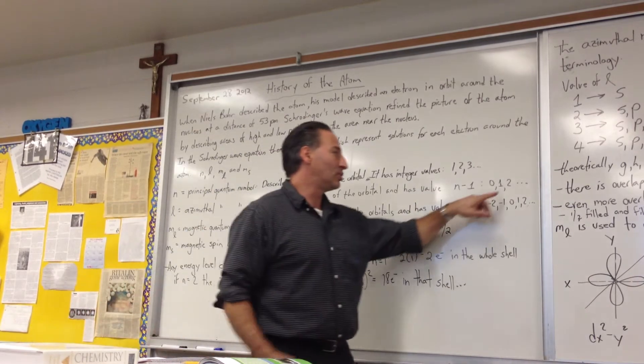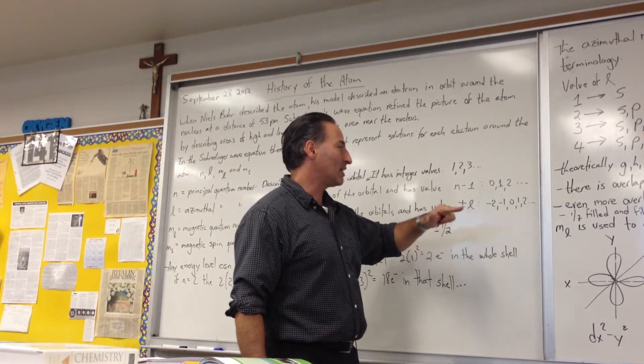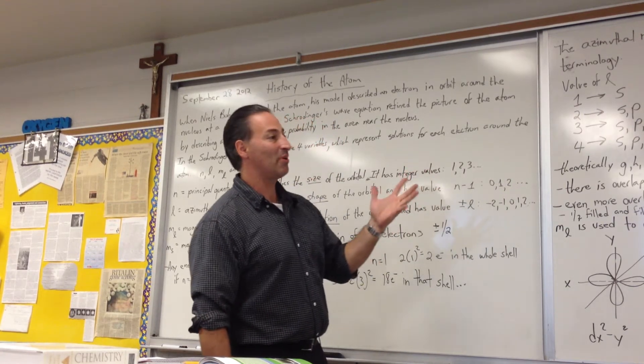So if L has a value of 2, then M sub L can be minus 2, minus 1, 0, 1, or 2. That gives you five possibilities.